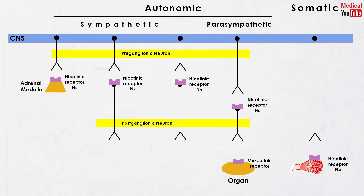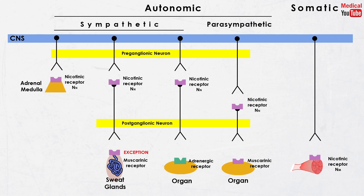Muscarinic receptors are located at the synapse of all parasympathetic neurons in the effector organ. Adrenergic receptors are located at the synapse of all sympathetic neurons in the effector organ. There is an exception: muscarinic receptors are also located at the synapse of the sweat glands in the sympathetic nervous system.